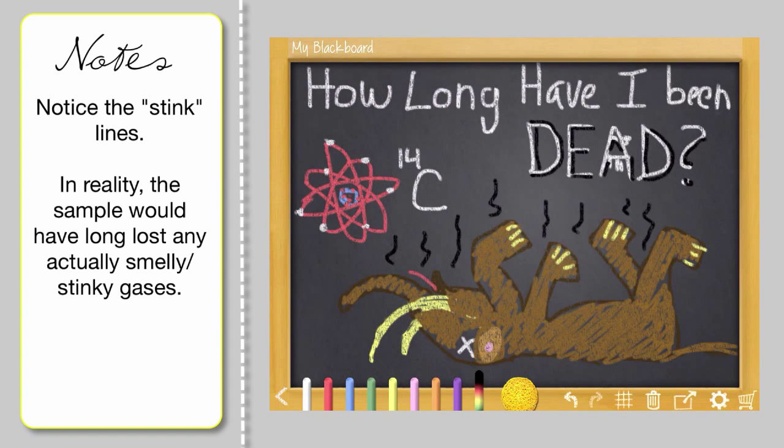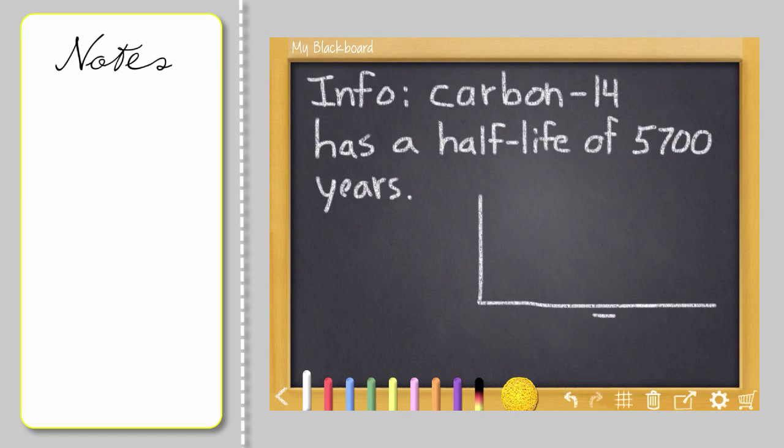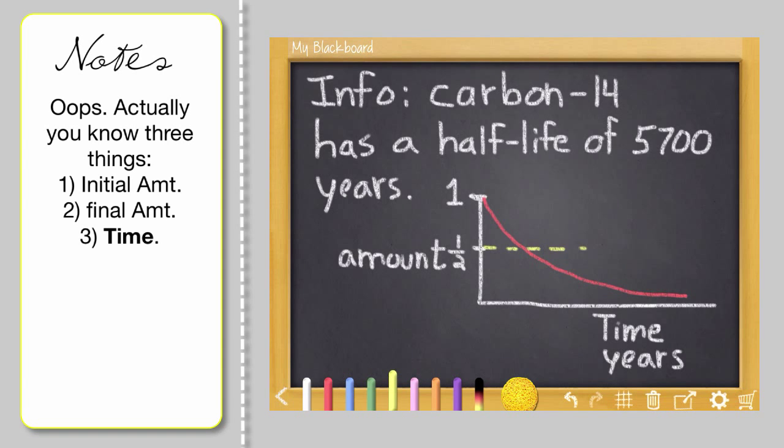Let's do a question that involves half-life. I like to call this one, How long have I been dead? Carbon-14 is a radioactive isotope that has a half-life of 5,700 years. Find out the rate of decay. This is good. When you hear the words half-life, you know two things. You know the original amount, and you know the amount remaining.